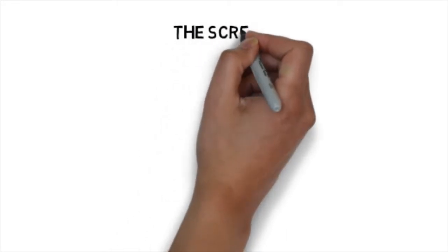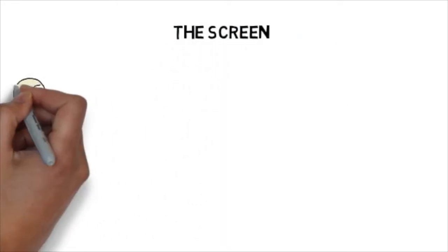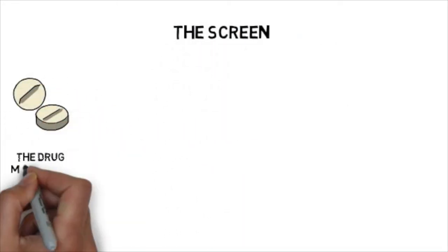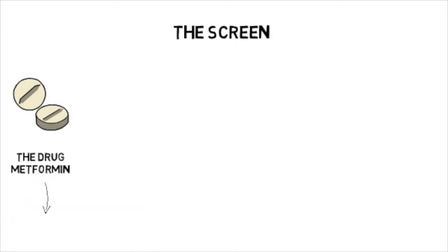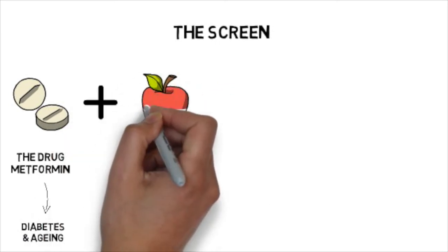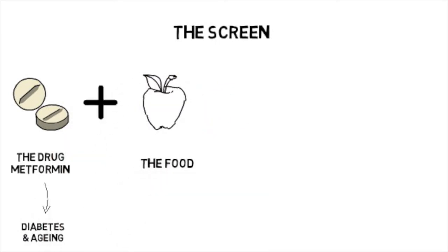We devised a four-way high throughput screen. The drug metformin was chosen as it's known to impact the microbiome and is used to treat conditions such as type 2 diabetes and ageing. Food is molecularly complex, so is broken down into individual nutrient elements that cover all major nutrient classes in our diets.